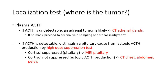For the localization test to find where the tumour is, we measure plasma ACTH. If it is undetectable, it suggests an adrenal origin, and we do further investigation such as a CT scan of the adrenal glands. If ACTH is detectable, we need to distinguish between a pituitary cause and ectopic ACTH production. We can do a high-dose dexamethasone suppression test. If cortisol is suppressed, it indicates a pituitary cause, and we do an MRI of the pituitary gland. If cortisol is not suppressed, it suggests ectopic ACTH production, and we perform a CT scan of the chest, abdomen, and pelvis to locate the tumour, for example small cell lung carcinoma.